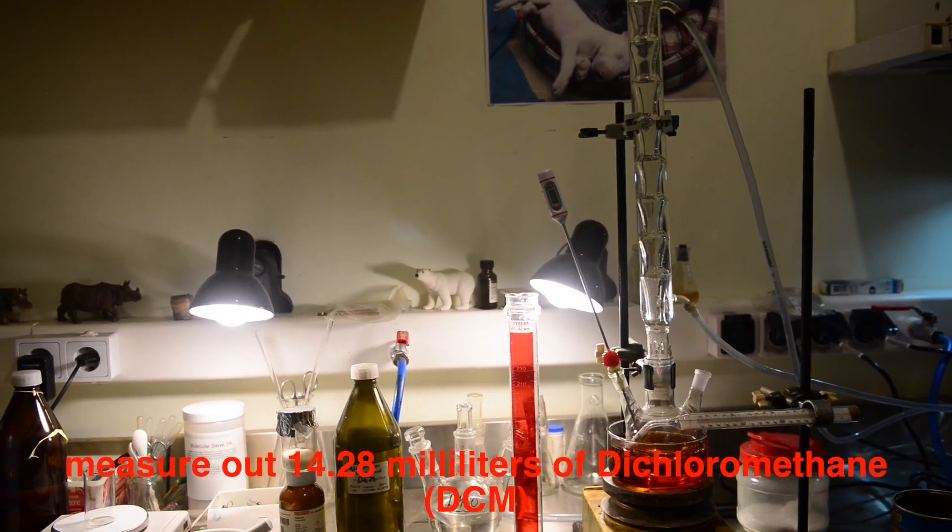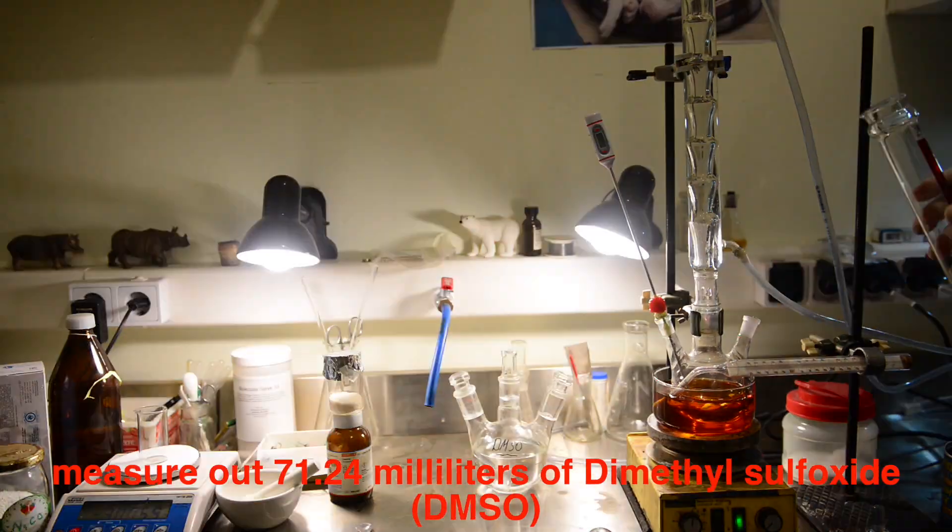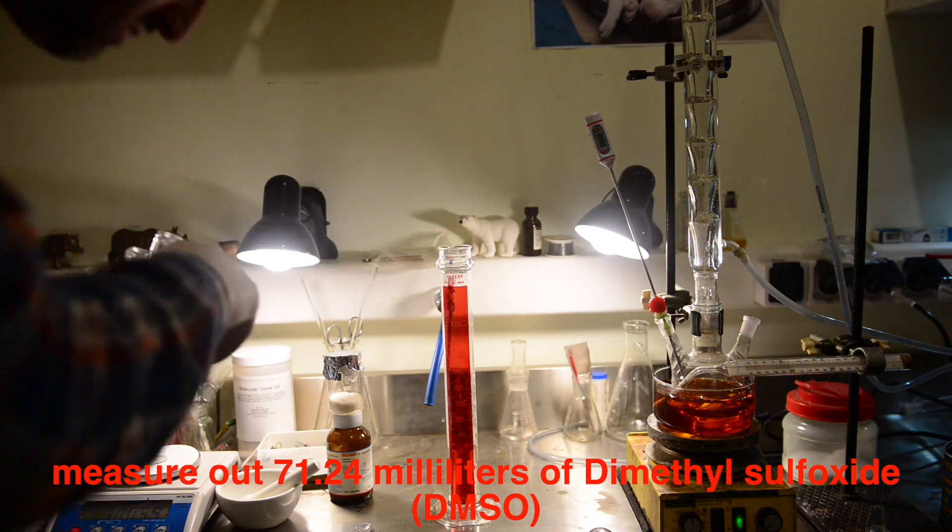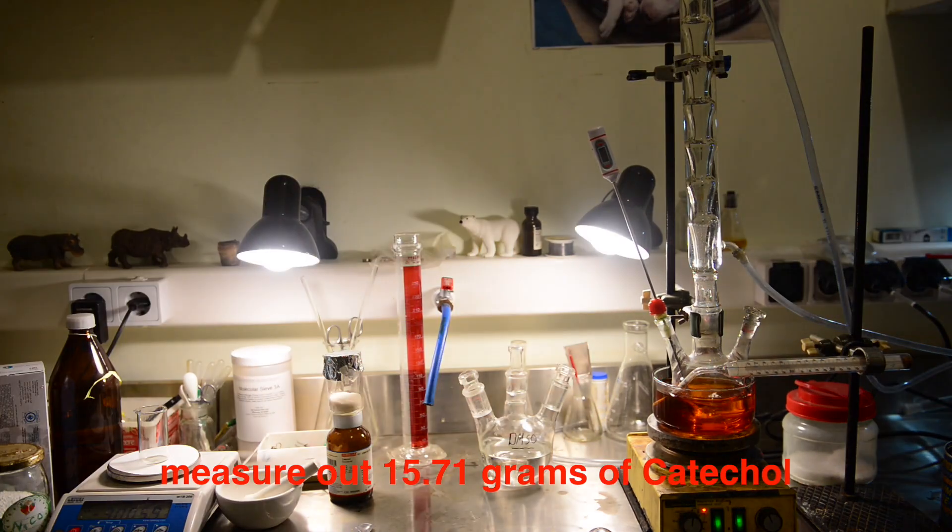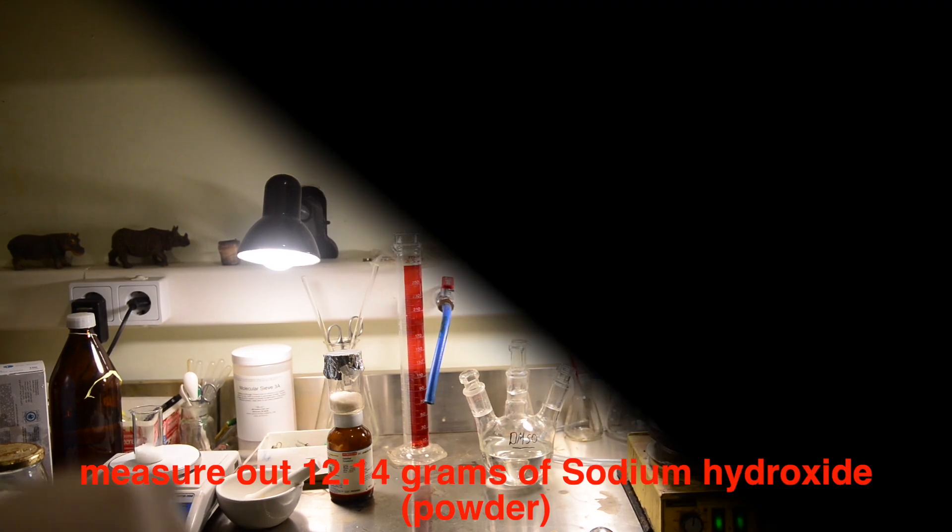We charge the flask with 14.28 milliliters of dichloromethane and 71.24 milliliters of DMSO. Let's weigh out 15.71 grams of catechol.